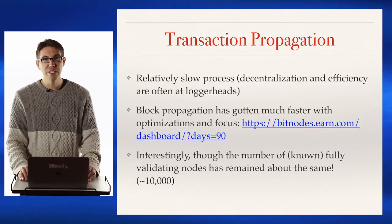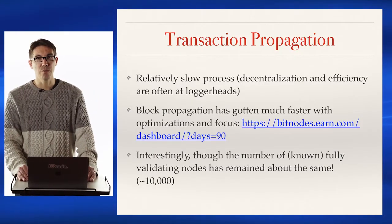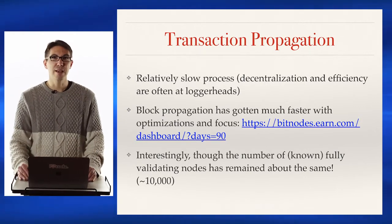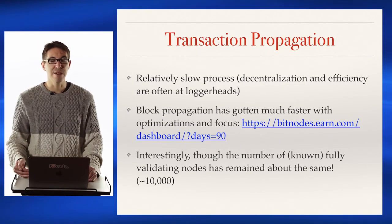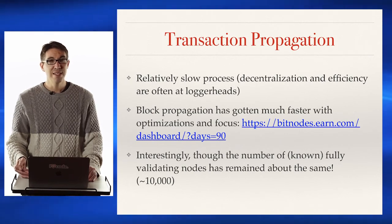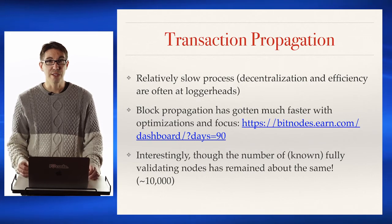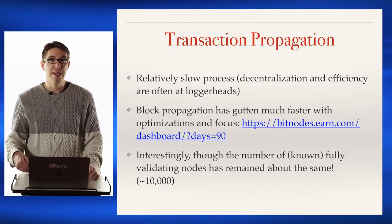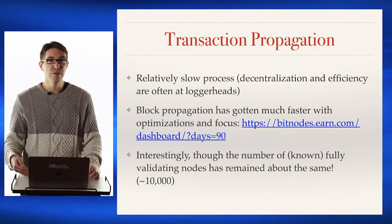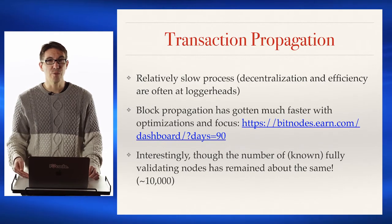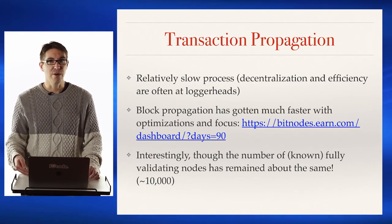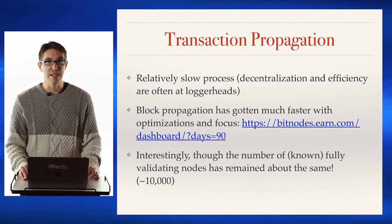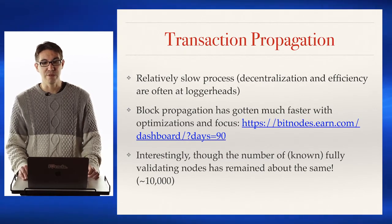Transaction propagation is a relatively slow process. Something you see again and again when talking about blockchain and decentralized systems is that decentralization and efficiency are often conflicting goals. Having a single centralized server is often much more efficient, at least in the short run — however, there are other problems that come with centralization as we've discussed before.